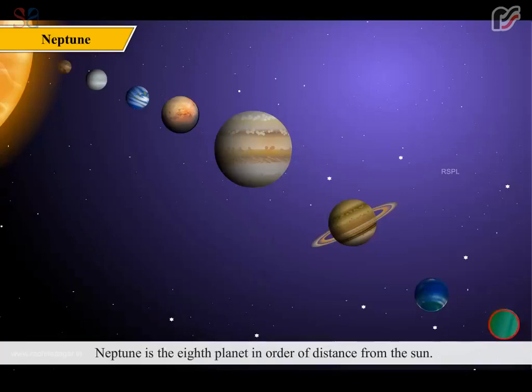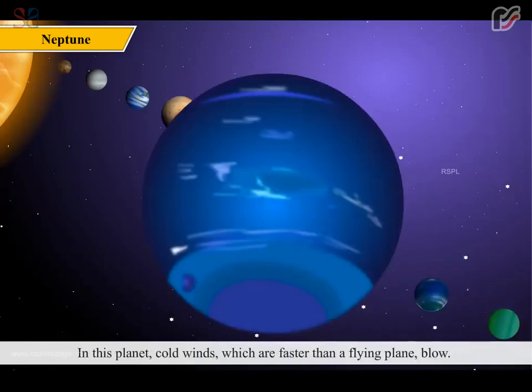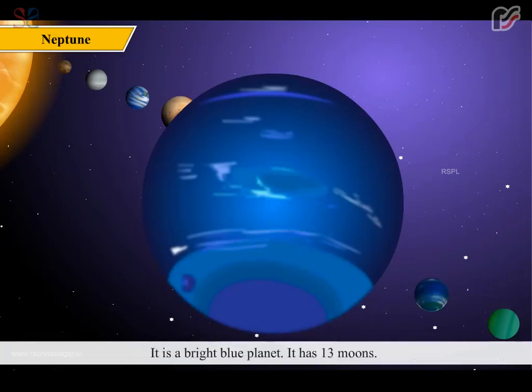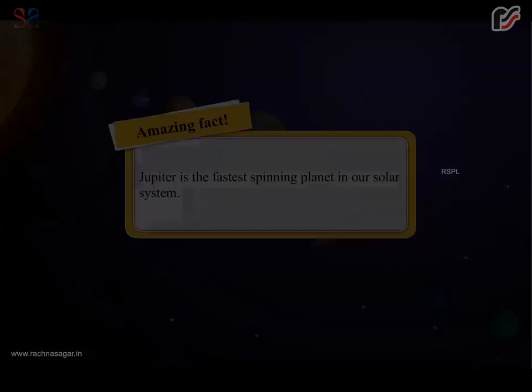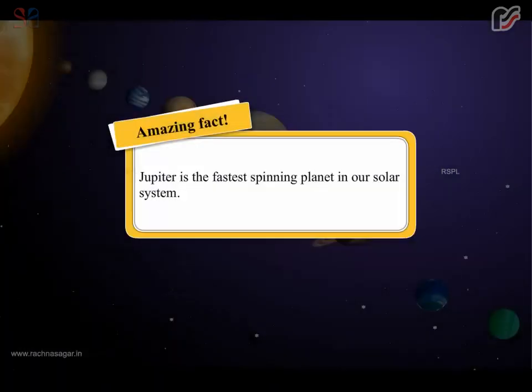Neptune is the eighth planet in order of distance from the Sun. In this planet, cold winds, which are faster than a flying plane, blow. It is a bright blue planet. It has 13 moons. Amazing fact: Jupiter is the fastest spinning planet in our solar system.